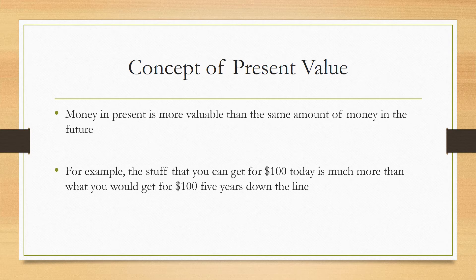Think about what you could have bought with a hundred dollars five years ago, and now think about what you can buy with the same hundred dollars today — much less. So that means the value of a hundred dollars has changed. The stuff you can buy with the same hundred-dollar bill is at least a little less than what you would get five years ago.